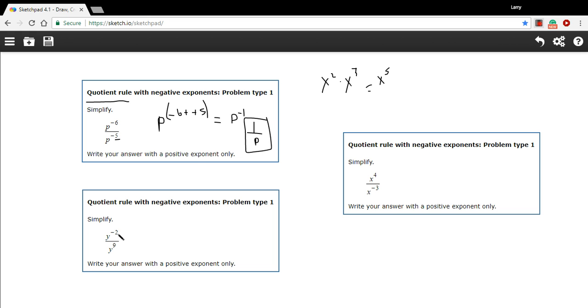Let's try another one just to practice this. So we're dividing y to the negative 2 by y to the ninth, so we're going to have y to the negative 2 minus 9, and negative 2 minus 9 is a negative 11, so this is y to the negative 11th. But they want us to write this with a positive exponent only, so we just take out the negative by putting it 1 over, so this is 1 over y to the 11th.